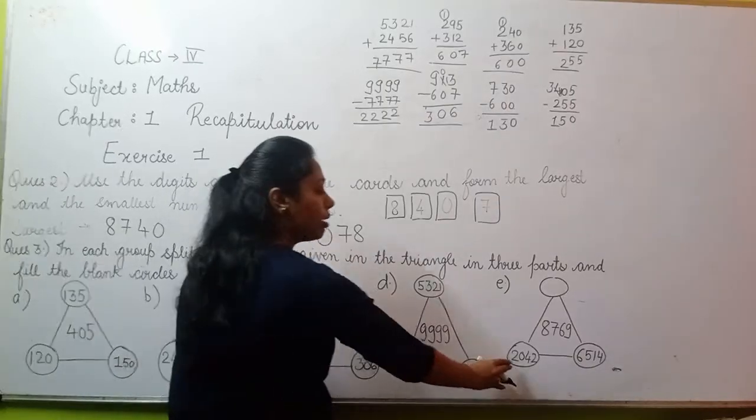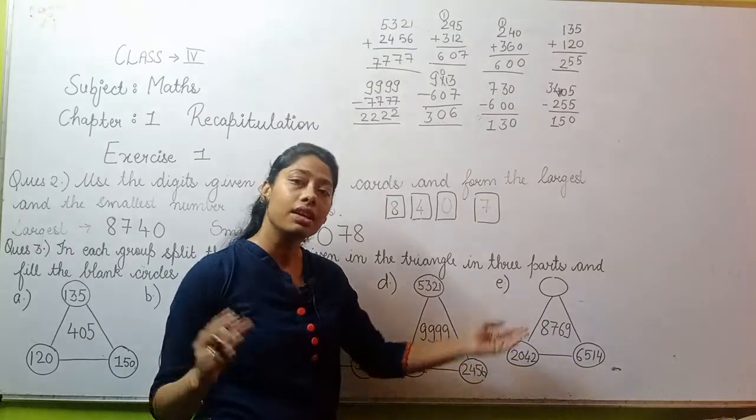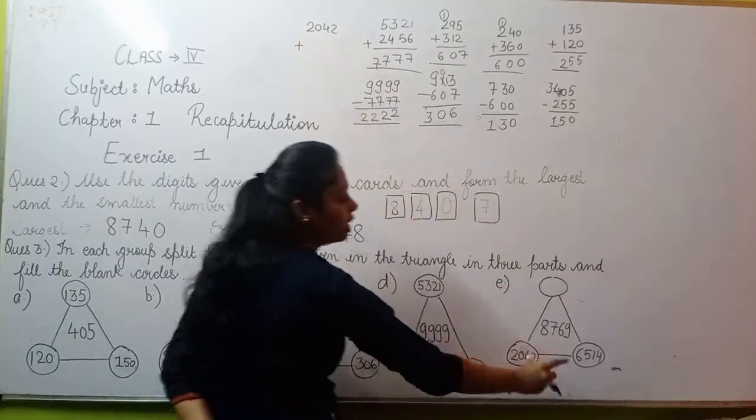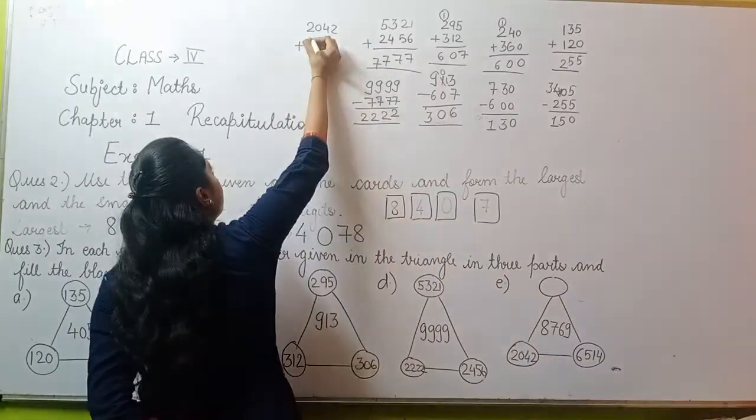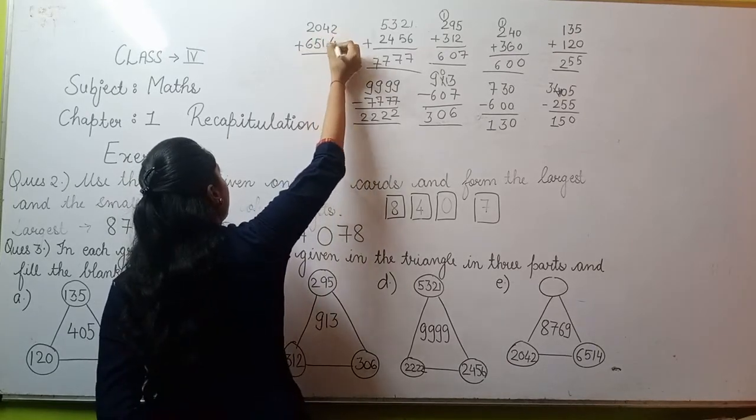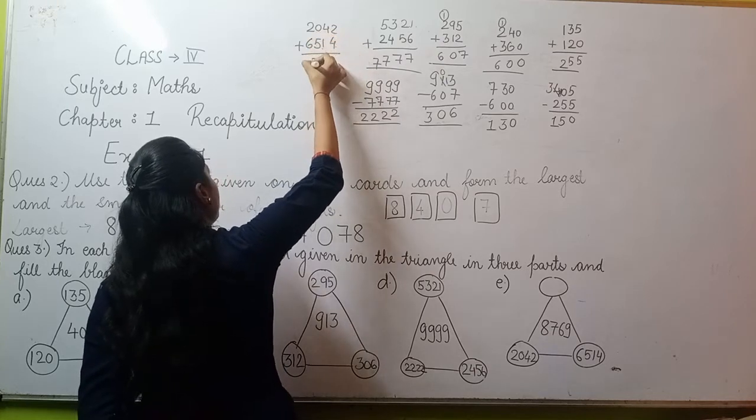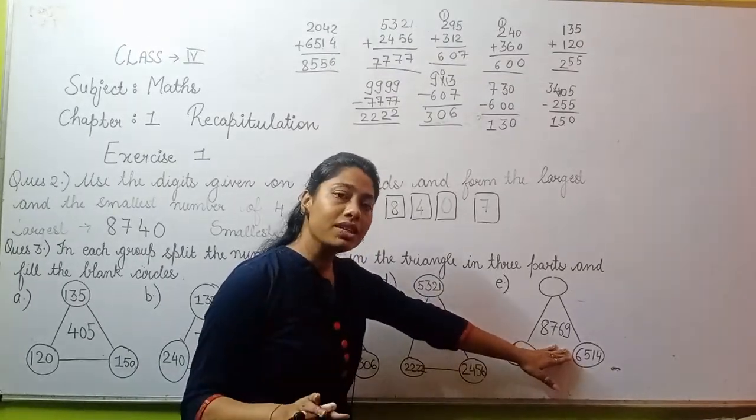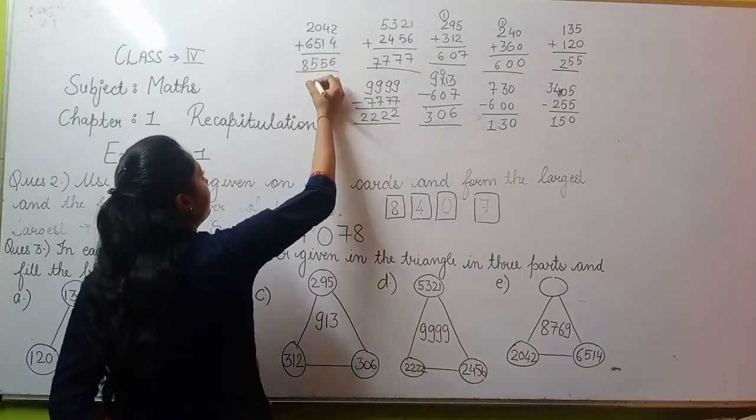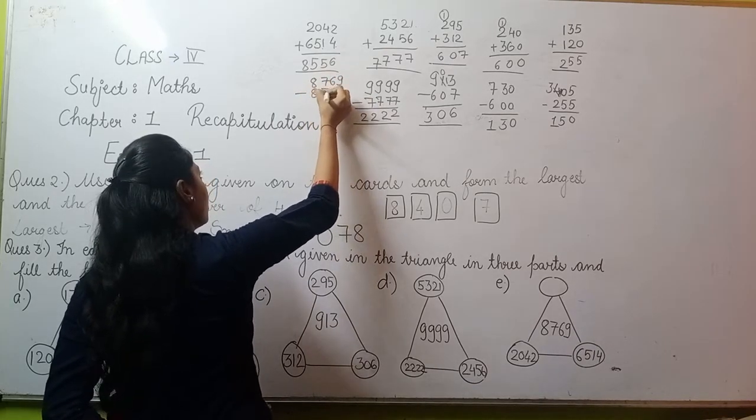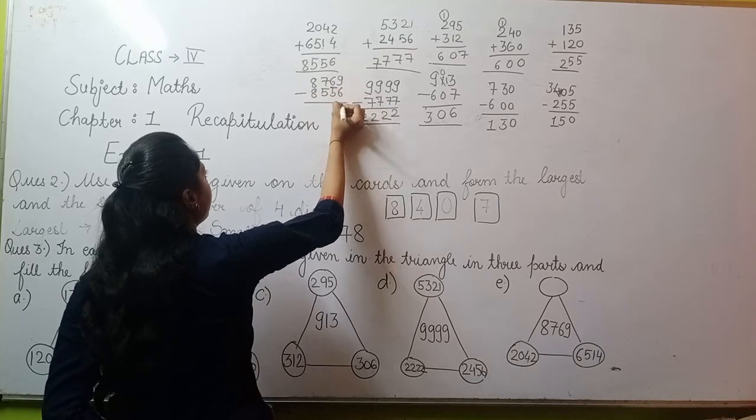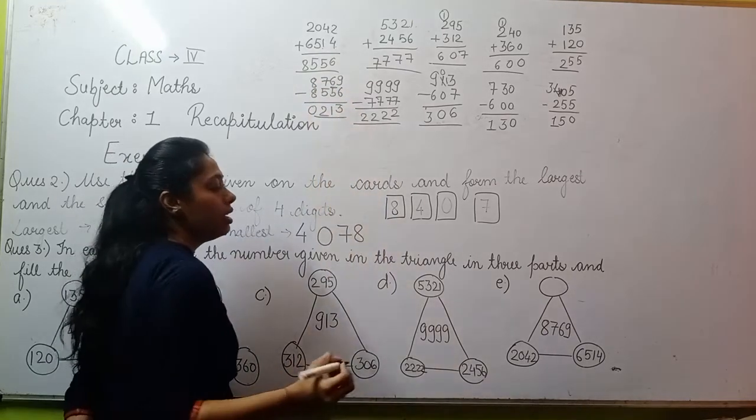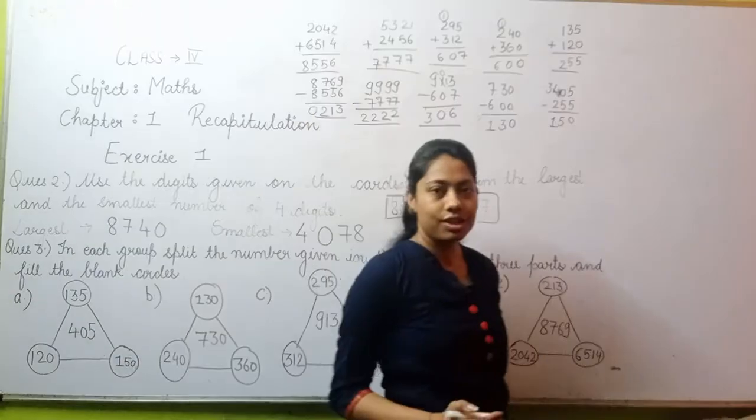For part E, again two circles are given. Add the two circles and subtract from the triangle. 2,042 plus 6,514: 2 plus 4 is 6, 4 plus 1 is 5, 0 plus 5 is 5, 2 plus 6 is 8, giving 8,556. Now subtract this from the triangle value: 8,769 minus 8,556. 9 minus 6 is 3, 6 minus 5 is 1, 7 minus 5 is 2, 8 minus 8 is 0, giving 213. This is your answer, 213.